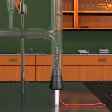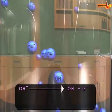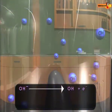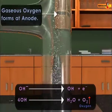At the anode, the negatively charged hydroxyl ions are discharged and they form water and oxygen gas.